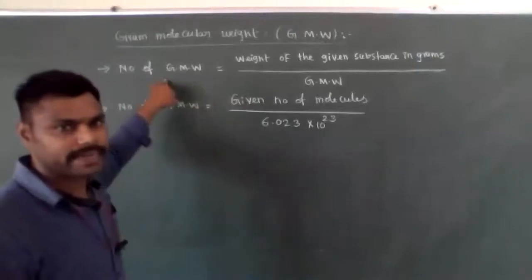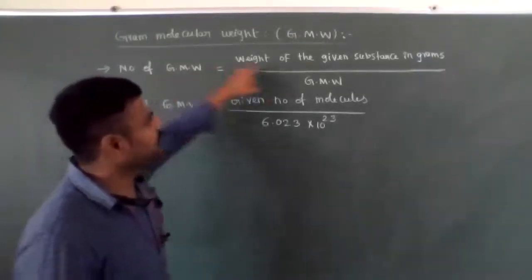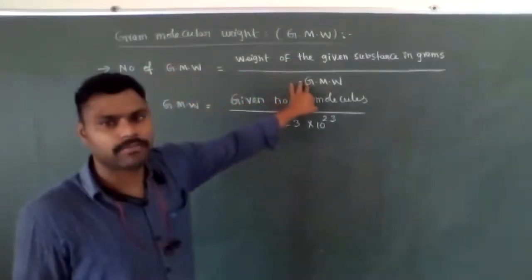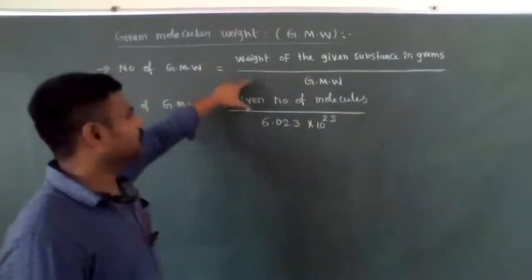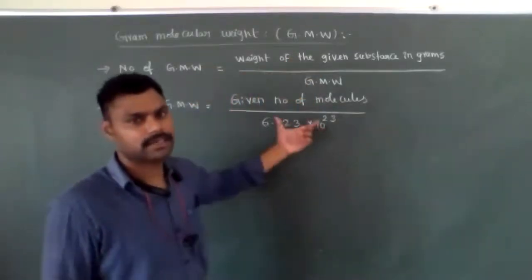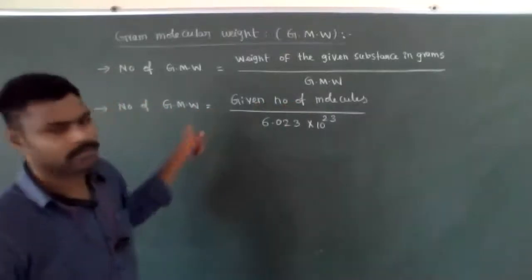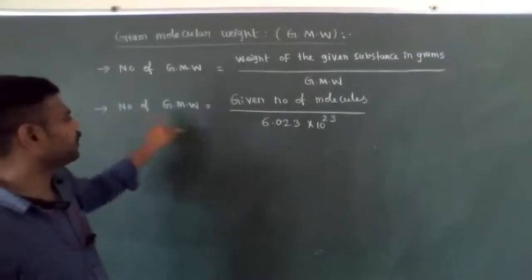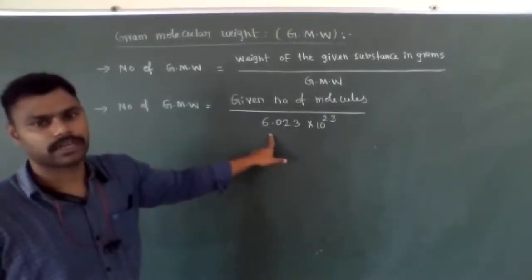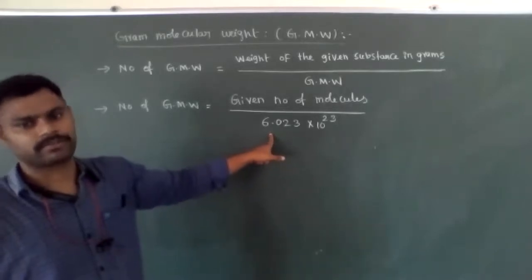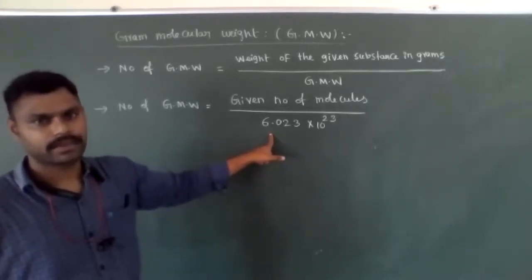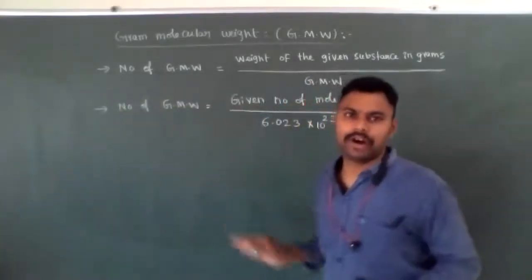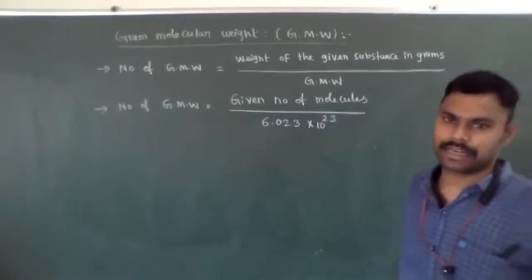Sometimes number of gram-molecular weights is given and we need to find the weight of the substance. Weight of substance equals number of gram-molecular weight × gram-molecular weight. By cross multiplication, number of molecules equals number of gram-molecular weight × 6.023 × 10²³. These are the two important formulas related to number of gram-molecular weight.